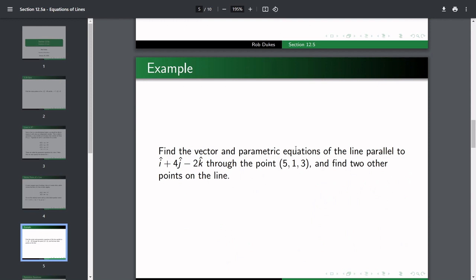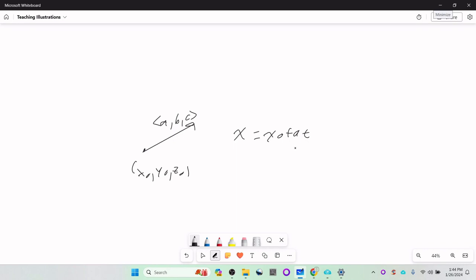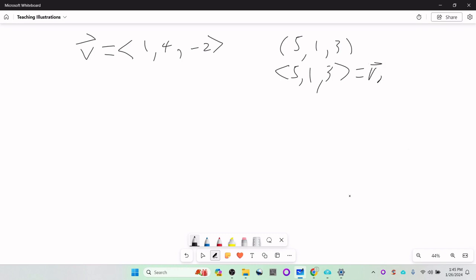So, let's do an example. Find the vector and parametric equations of the line parallel to I plus 4J minus 2K that goes through the point 5, 1, 3. And for good measure, let's find two other points on the line. So, it's not anything too fancy here. We have the velocity vector is 1, 4, and negative 2, or I plus 4J minus 2K. And the starting point is 5, 1, 3.